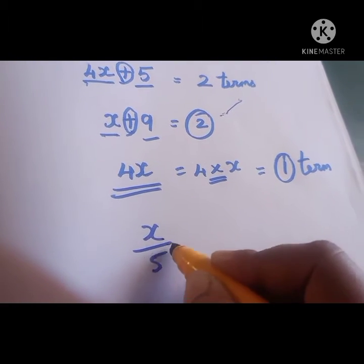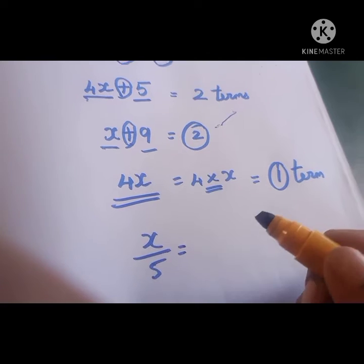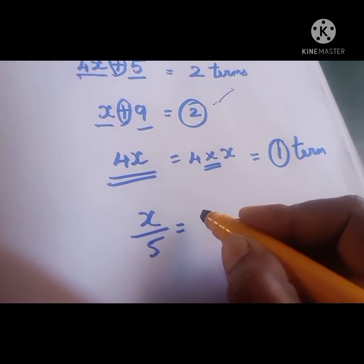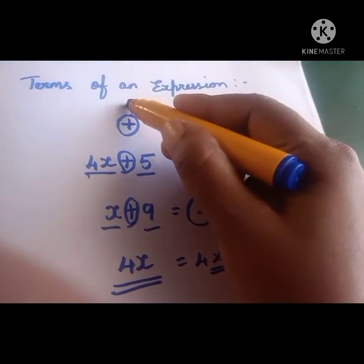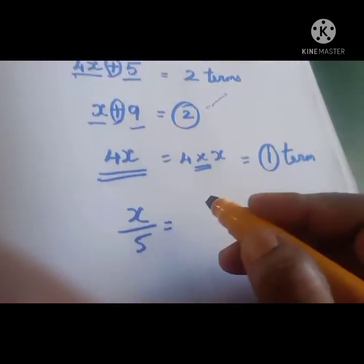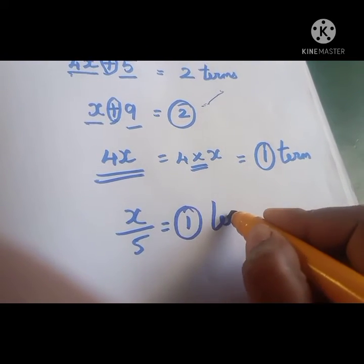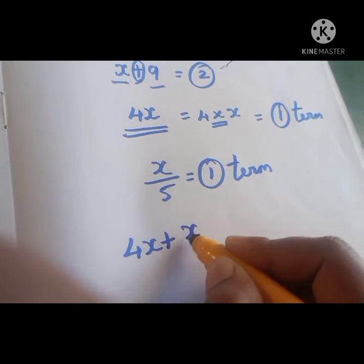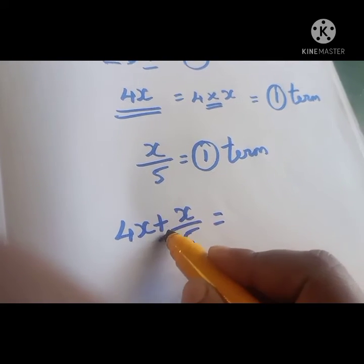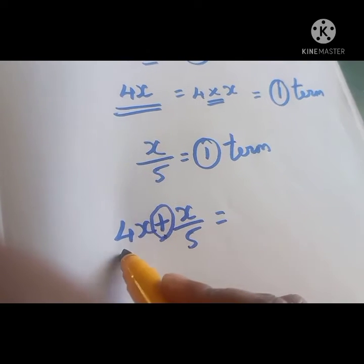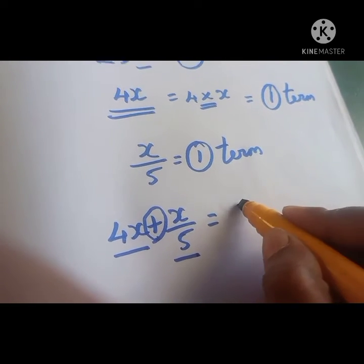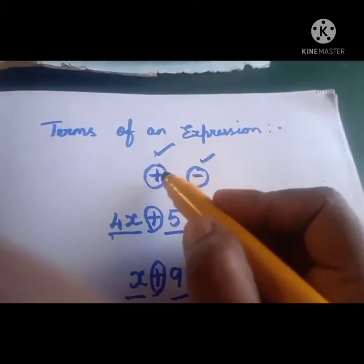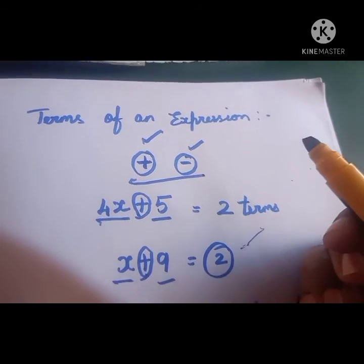x by 5 means x divided by 5. Division also we should not consider — only plus and minus signs. So x by 5 is also only 1 term. In 4x plus x by 5, there is a plus sign, so 4x is 1 term and x by 5 is 1 term — 2 terms. Terms are split by plus and minus signs.